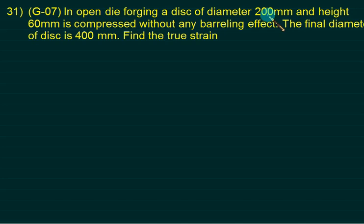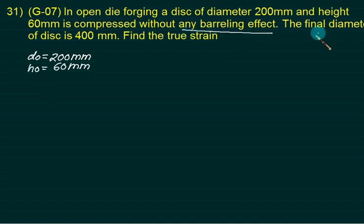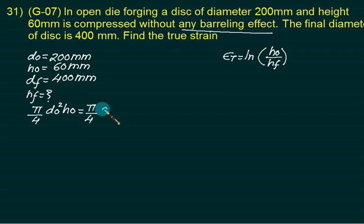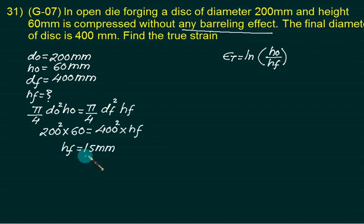Example 1: Open die forging with disc initial diameter D0 = 200 mm, initial height H0 = 60 mm, compressed without barreling to final diameter DF = 400 mm. Using volume conservation: 200² × 60 = 400² × HF, giving HF = 15 mm. True strain = ln(60/15) = ln(4) = 1.386.